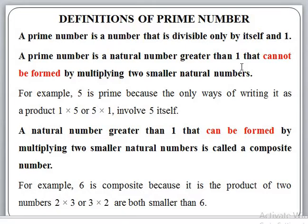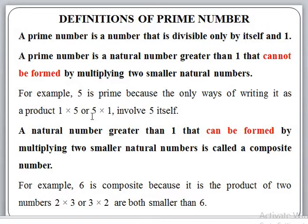Any natural number bigger than 1 that is not able to be formed by multiplying two smaller natural numbers is a prime number. For example, consider 5: it can be written as 1 × 5 or 5 × 1, but in both cases the number 5 itself is involved — no two numbers smaller than 5 and greater than 1 multiply to give 5. That is why 5 is a prime number.